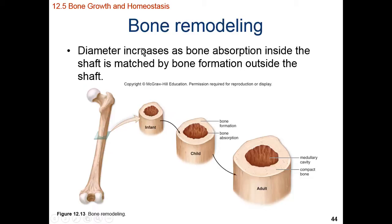During bone remodeling, we also increase the diameter of our bones so that the width of compact bone tissue remains about the same. We have bone formation on the outside and bone absorption on the inside. This results in an adult bone that has an overall larger medullary cavity compared to a juvenile or infant bone, which has a smaller hollow space within its diaphysis.